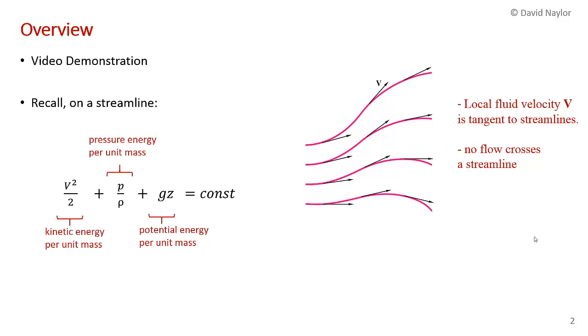So I've drawn some streamlines here. The red lines are streamlines, and the black line labeled with a capital V is the velocity vector field. And you can see that the local fluid velocity is everywhere tangent to the streamlines. And so no flow crosses a streamline.